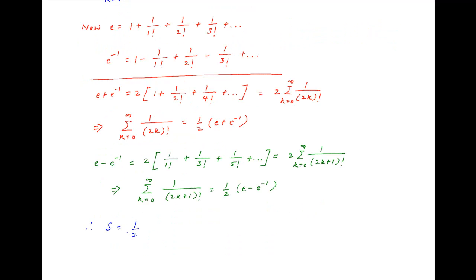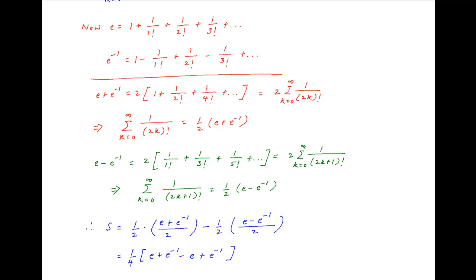Substituting these results, the value of S is equal to half of (e + e⁻¹)/2 minus half of (e − e⁻¹)/2. This simplifies to one quarter times (e + e⁻¹ − e + e⁻¹). The e terms cancel inside the brackets, giving S = (1/4) × 2e⁻¹, which equals 1 upon 2e. And this is the required answer.